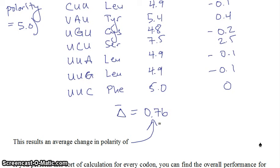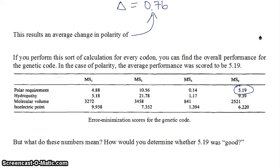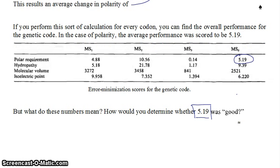They performed this sort of calculation for every single codon and found the overall performance for the genetic code. In the case of polarity, the average performance was scored to be 5.19 for the polar requirement. But what does this number mean? How do you determine whether 5.19 is good? We're going to focus on this polar requirement because that's the main one they looked at, and the question is how do you determine if this number is good or not.